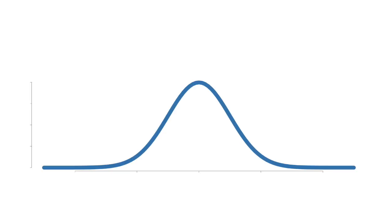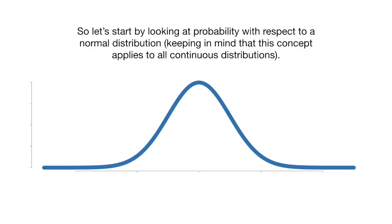For me, the easiest way to understand the difference between probability and likelihood is to just see it in pictures. So let's start by looking at probability with respect to a normal distribution, keeping in mind that this concept applies to all continuous distributions.